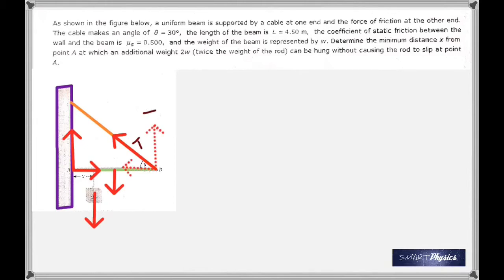The tension is T. Tension in the cable T can be resolved into T sin theta and T cos theta. This T cos theta is exactly equal and opposite to the normal reaction, and this is the friction. W is the weight of the beam acting down through its center, and you have two times W acting at a distance x from the beam.